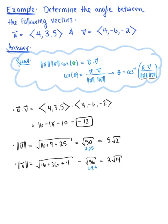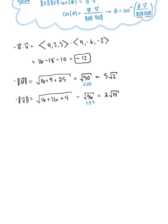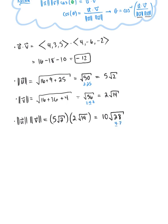To help simplify our calculations, let's find the product of the two magnitudes: the magnitude of u times the magnitude of v equals 5 times the square root of 2, multiplied by 2 times the square root of 14. That gives us 10 times the square root of 28. Since 28 equals 4 times 7, this simplifies to 20 times the square root of 7.